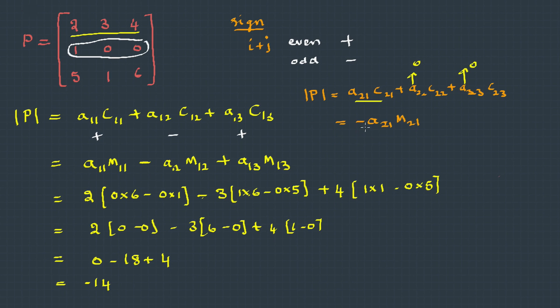And we are having negative here because 2+1 is 3, which is odd, therefore for minor we will be taking negative. And on simplification it gives the answer -14.